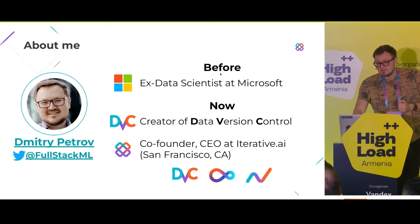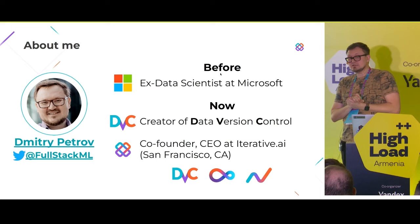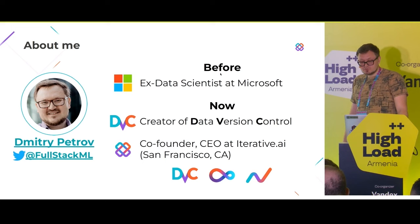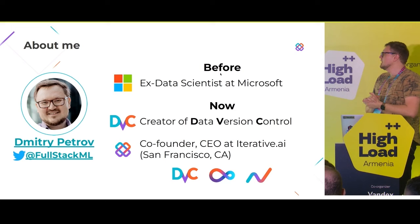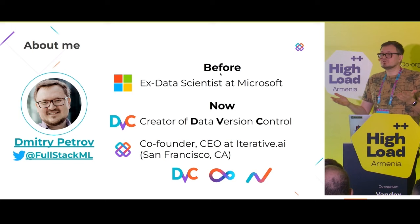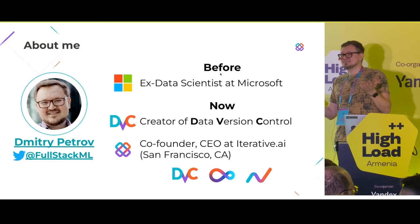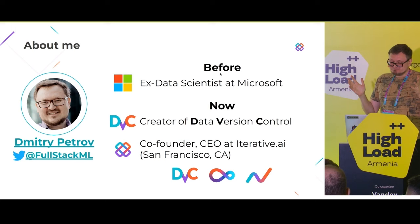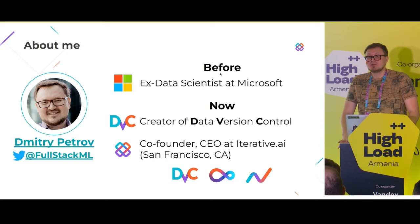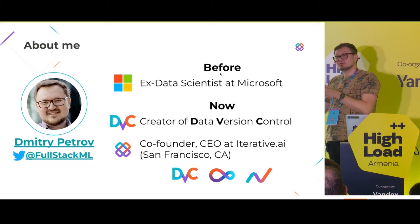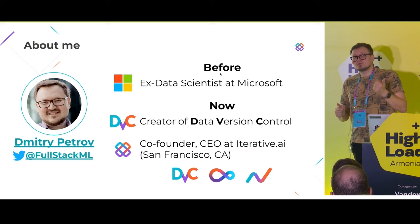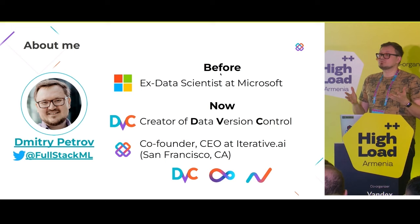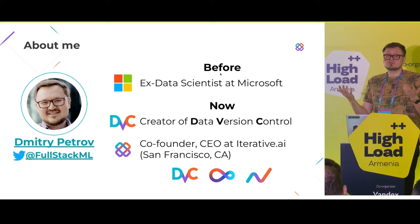A little bit about myself: I was a data scientist at Microsoft Bing about five years ago. Later I created the DVC open source project — Data Version Control. DVC is one of those open source projects with a community and a lot of people using these tools. Did anyone try or use DVC? A bit later we created a company, Iterative AI. We focus on AI infrastructure and building tools to help data scientists. Data versioning and data management is our key focus, and on DVC we help people track experiments, manage pipelines — today I'll focus on experimentation capabilities using Git as a primary source of truth.